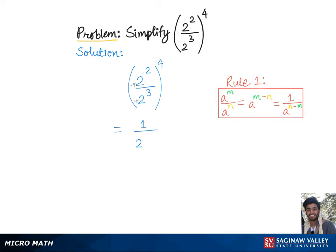This equals 1 over 2 to the first, as a whole to the fourth power. Now we'll further simplify this using Rule 2, according to which we basically multiply the exponents.